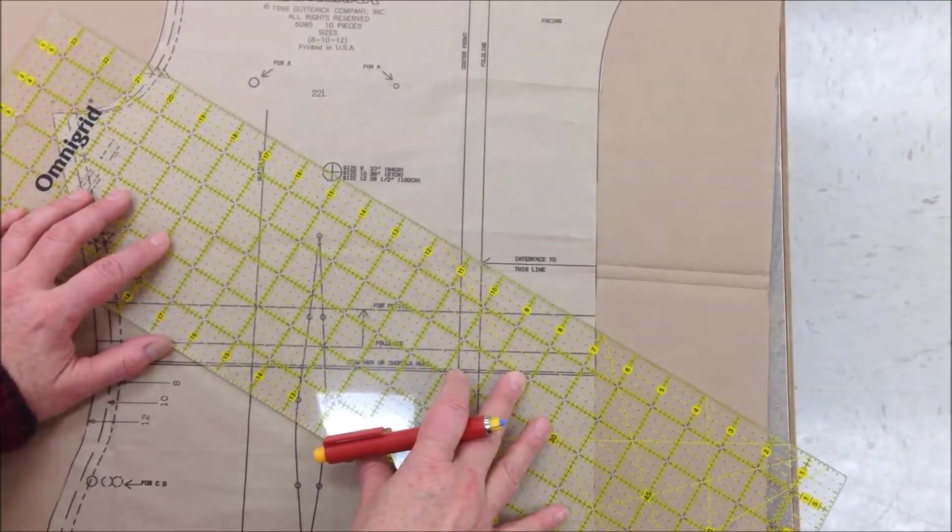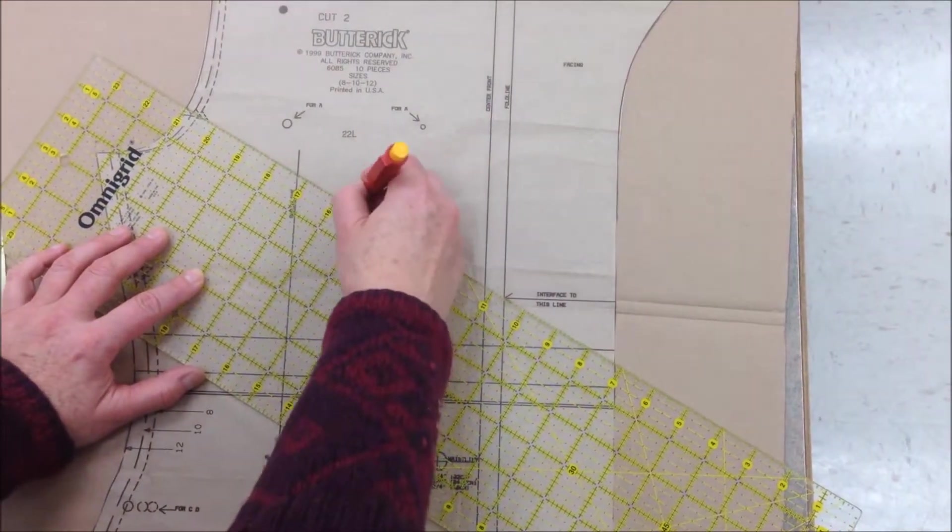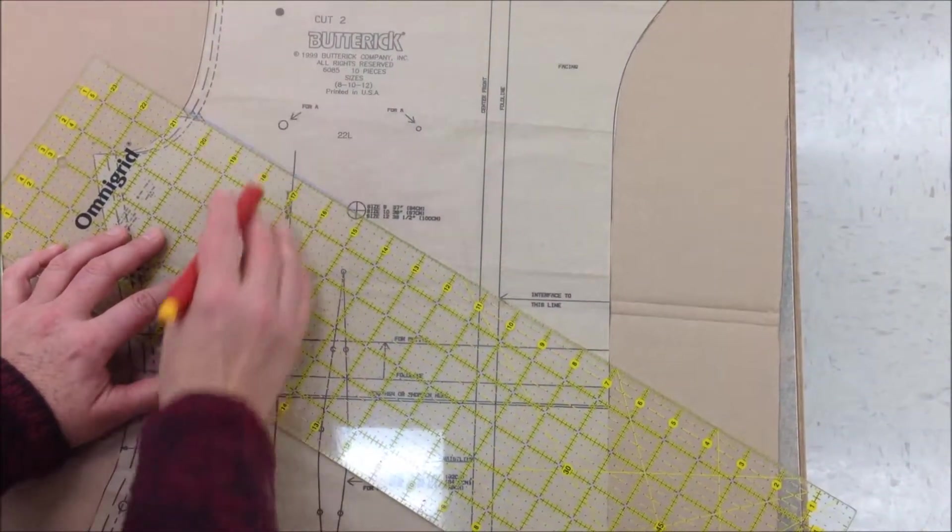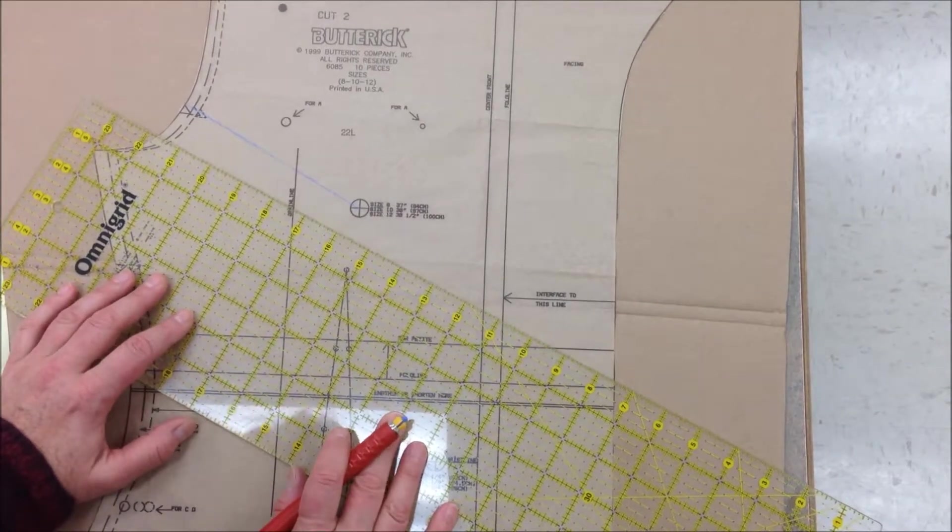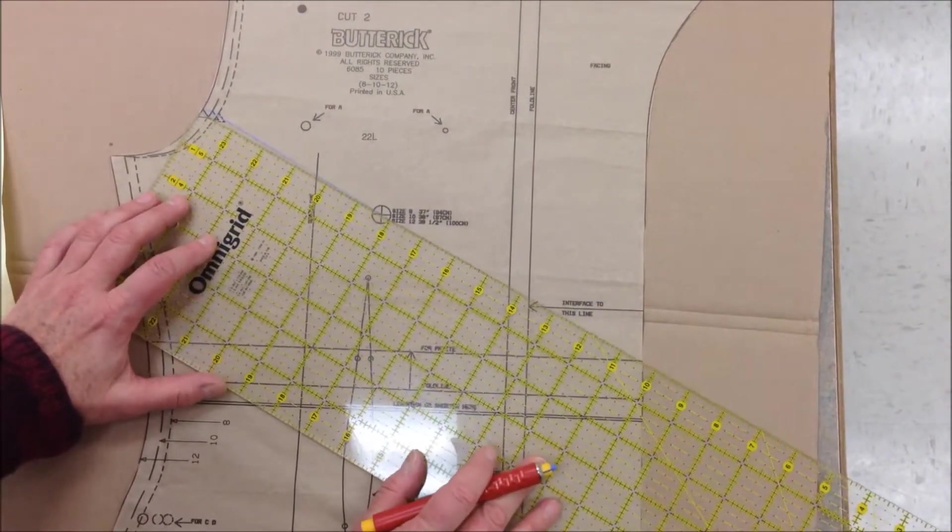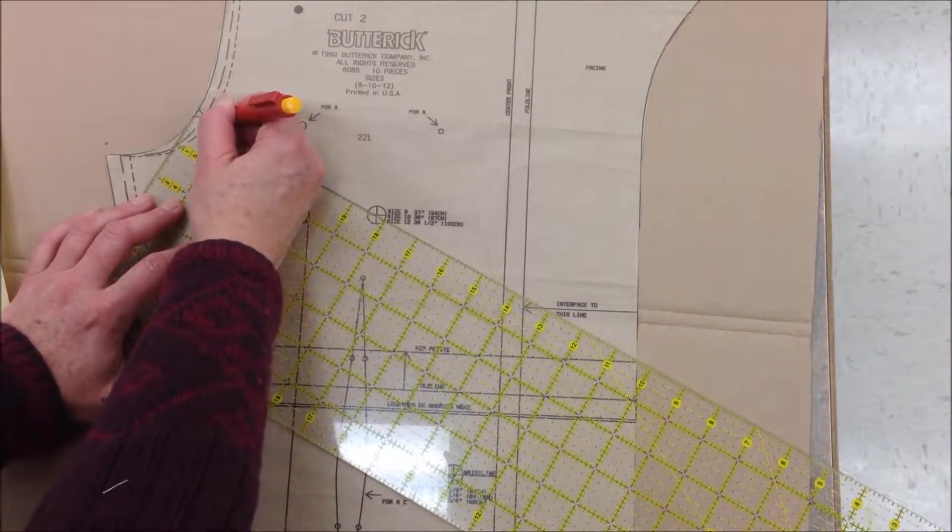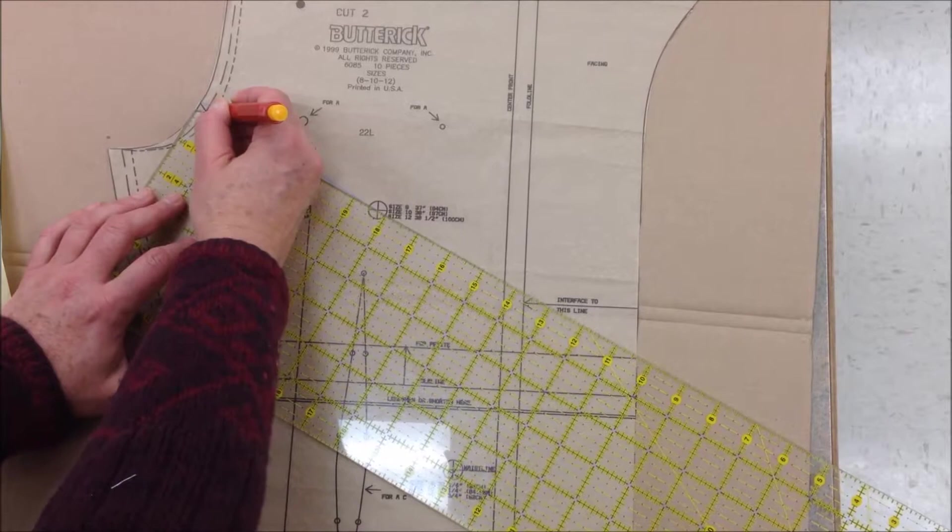Come right above the armseye notch and draw your first line. Now this is a full pattern and that means it has seam allowances. So we need to draw a hinge mark not at the cutting line but at the seam line which is 5/8 in.